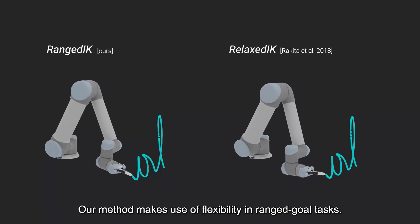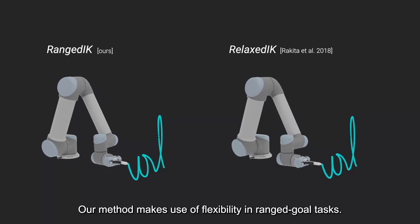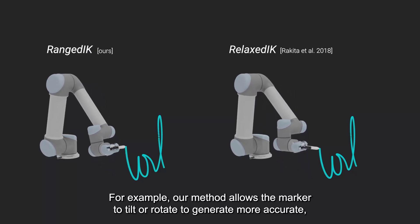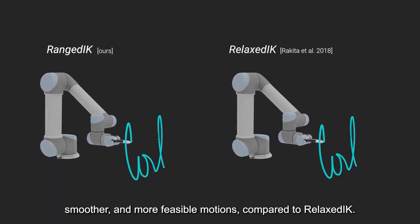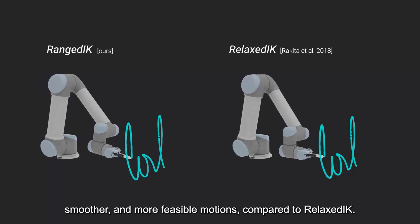Our method makes use of flexibility in range goal tasks. For example, our method allows the marker to tilt or rotate to generate more accurate, smoother, or more feasible motions, compared to RelaxIK.